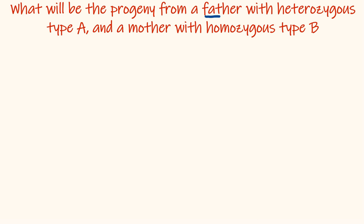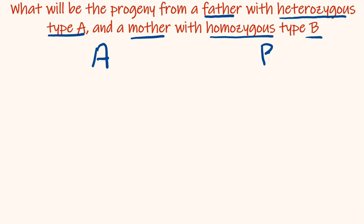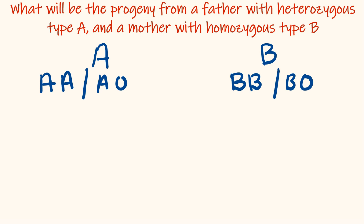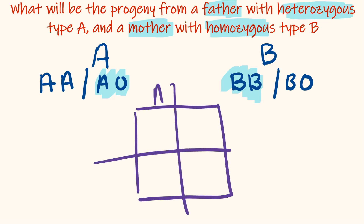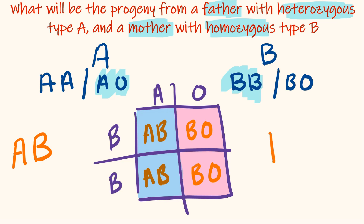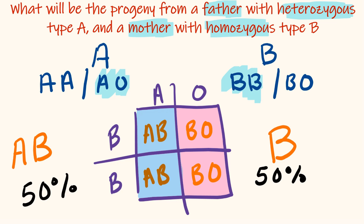What will be the progeny from a father with heterozygous type A (genotype AO) and a mother with homozygous type B (genotype BB)? Drawing a Punnett square with AO and BB gives genotypes AB and BO. Genotype AB gives a phenotype of AB blood type, and genotype BO gives a phenotype of B blood type. So there is a 50% chance of AB phenotype and a 50% chance of B phenotype.